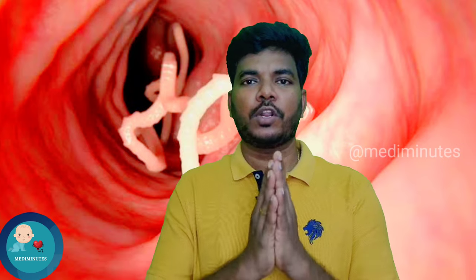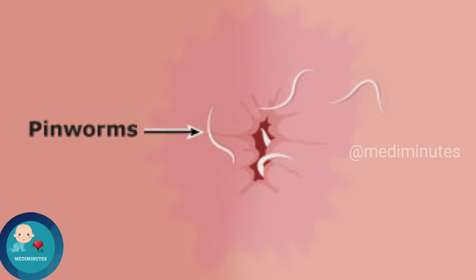When you have pinworm infections, if you look at the house in the night area, you can see a complaint in the perianal region. There is some amount of irritation in the perianal region. The pinworms are active in the night area and the female worms lay eggs in the perianal region.